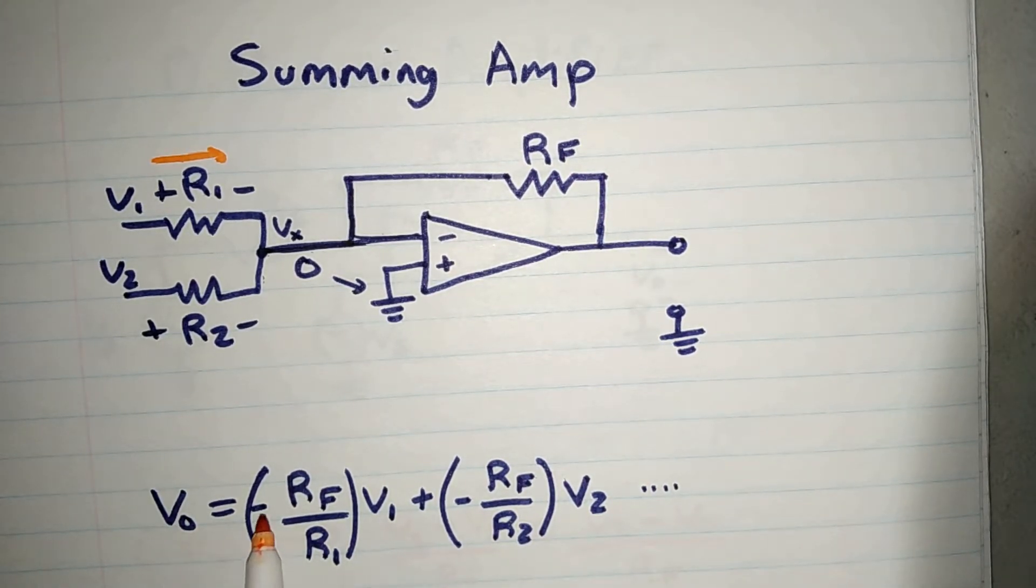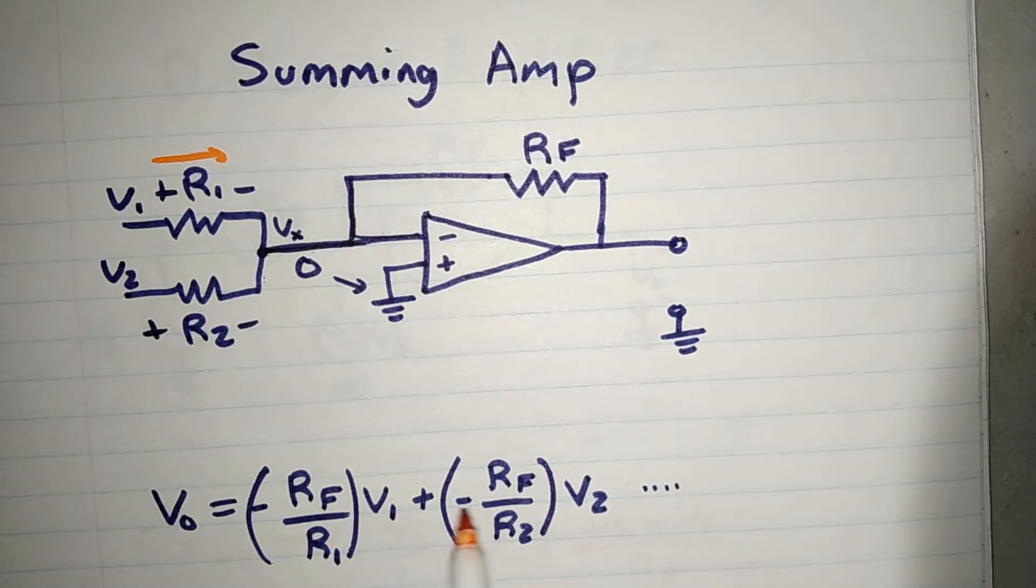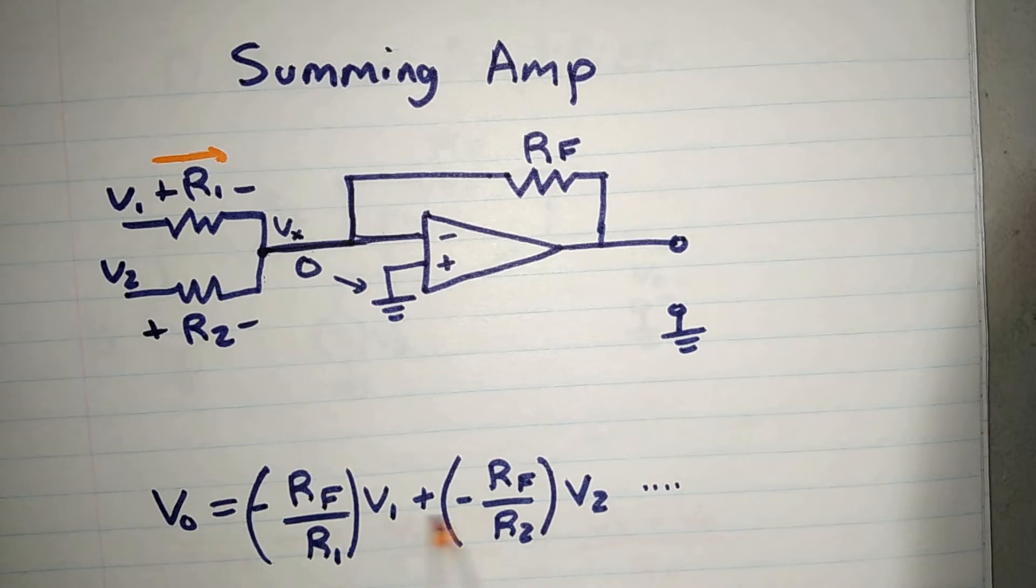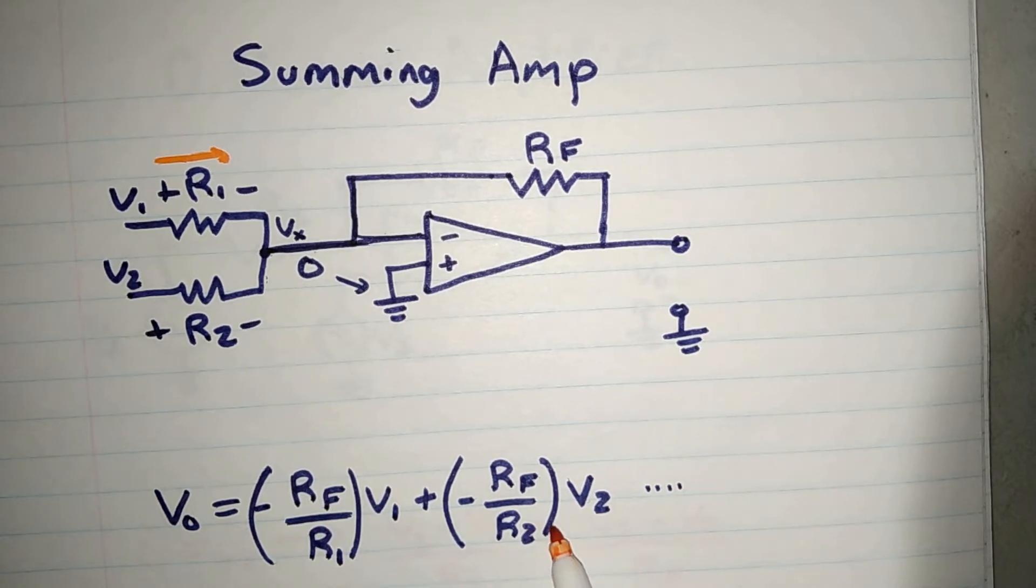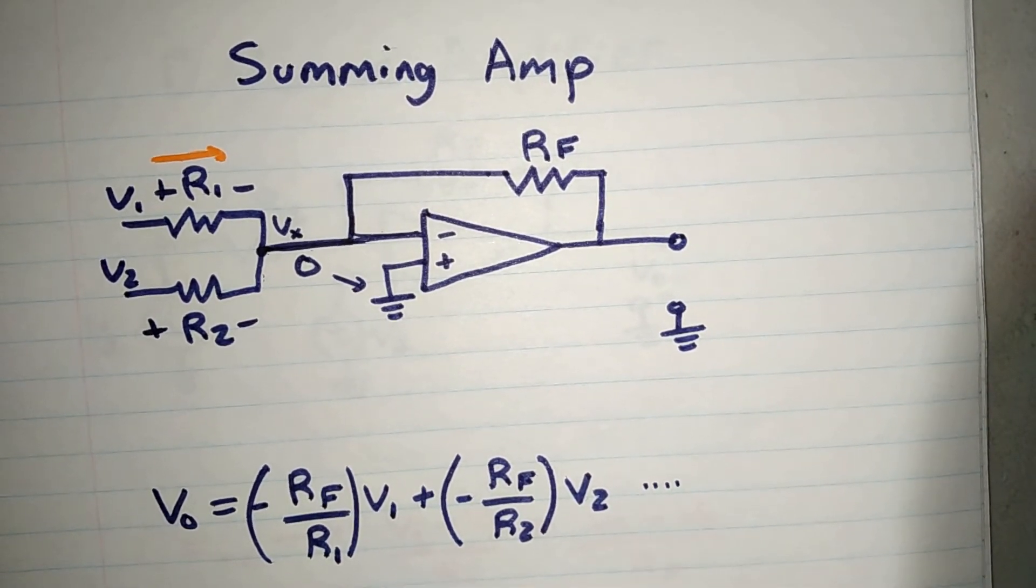Vout is going to equal to negative RF over R1, V1, and then plus the same thing repeated, except 2. And it can infinitely go on, 3, 4, 5, 6.